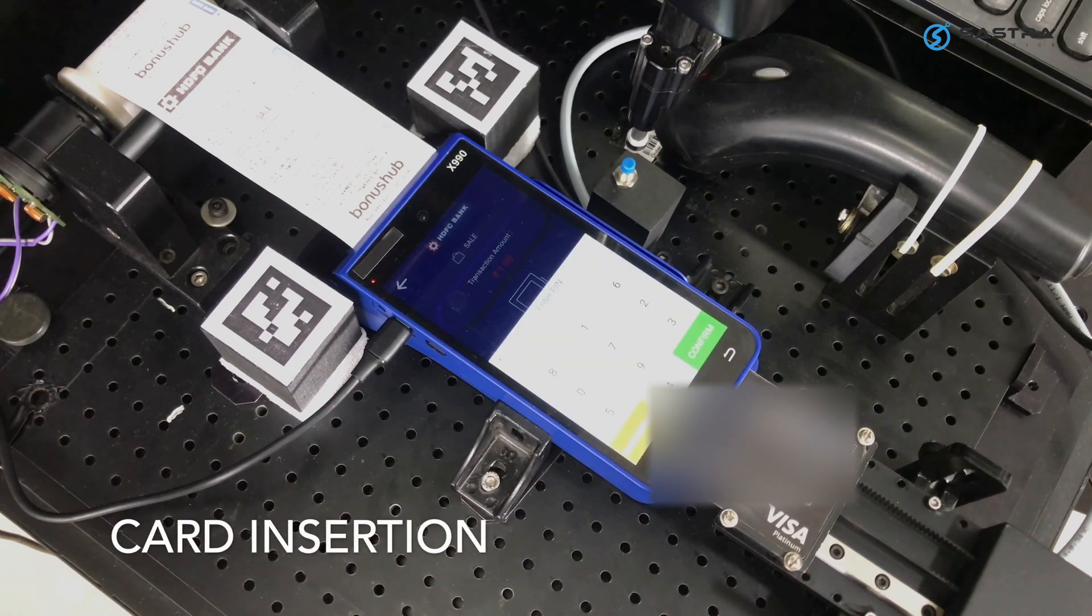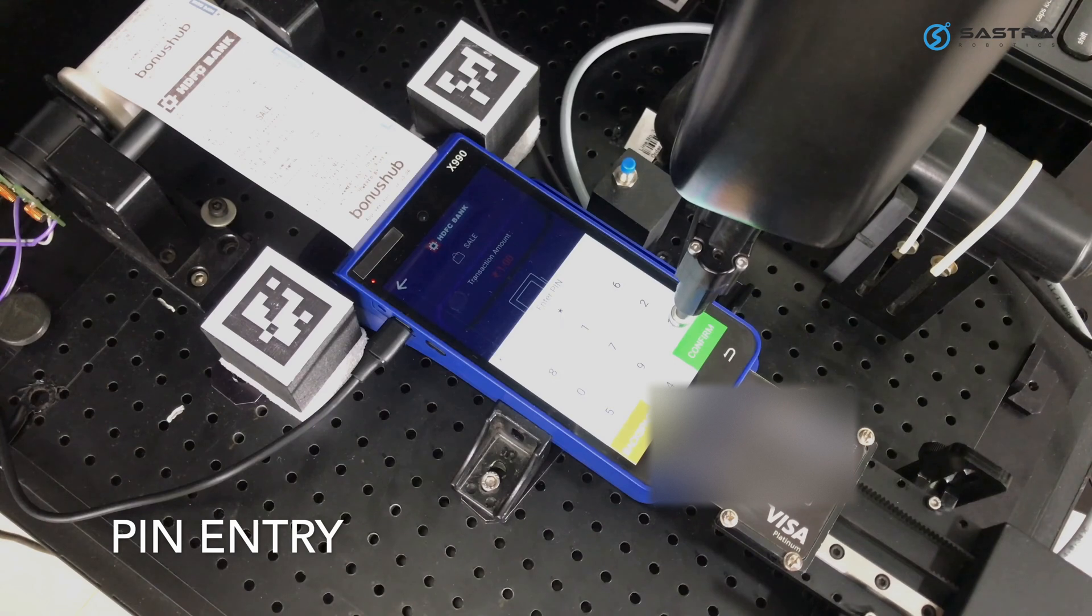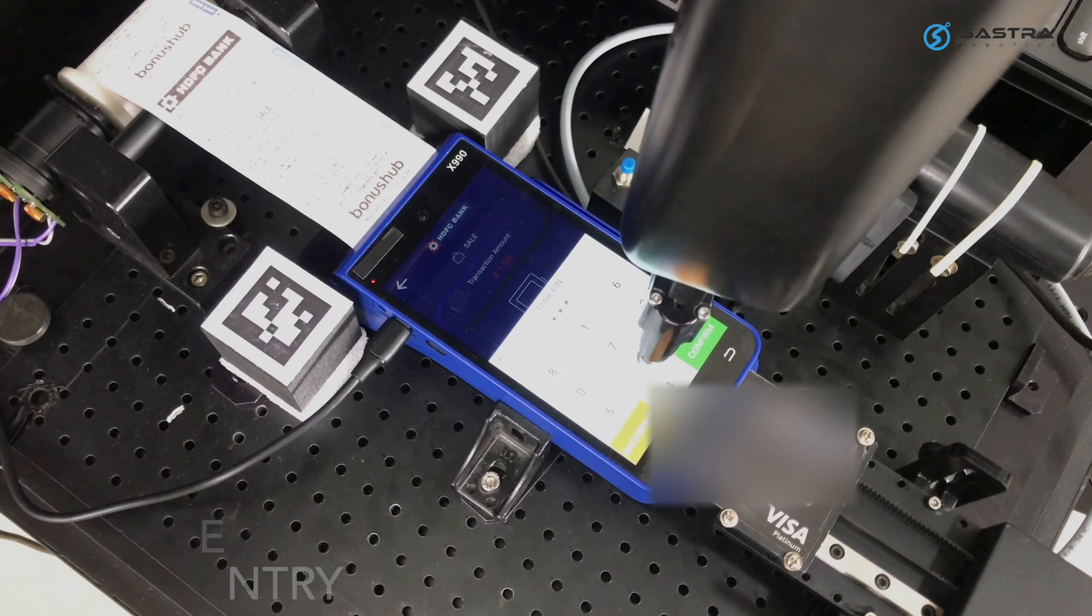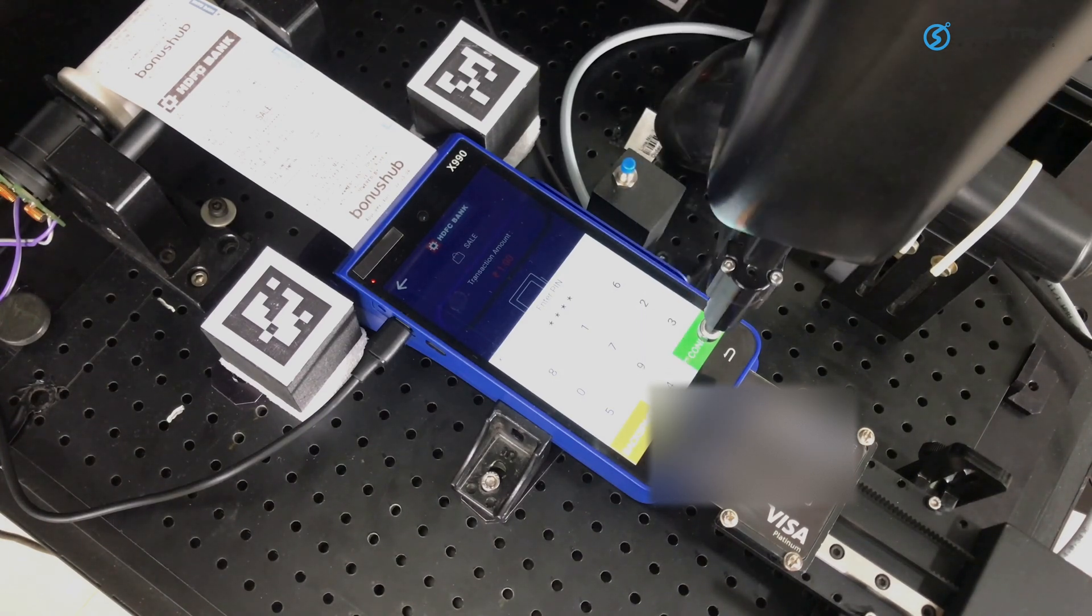The PIN entry screen generates random PIN positions for safety. Using optical character recognition, the robot identifies the PIN position and enters the PIN.